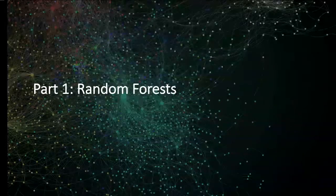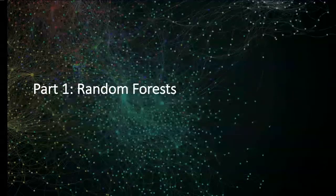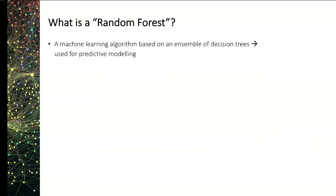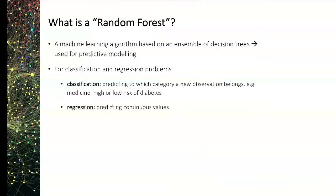So random forests — who of you has used random forest so far? About half, maybe a bit less. A random forest is a machine learning algorithm based on an ensemble of decision trees. It's used for predictive modeling and can be used for classification and regression problems. Classification means predicting the category of a new observation — for example in medicine, predicting whether a patient falls into a high-risk or low-risk category for diabetes. A regression problem means predicting an actual absolute value.